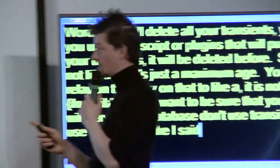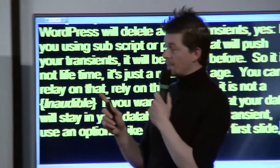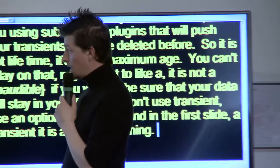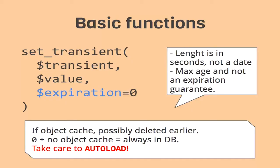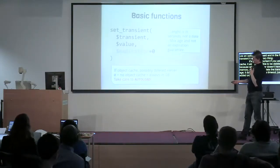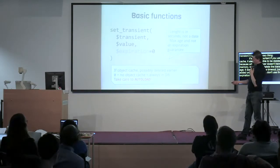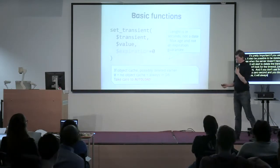Like I said in the first slide, a transient is a temporary thing. If you're using object cache, it's also possible to be deleted earlier, because when the server doesn't have enough memory it will start to delete transients by age - it doesn't look at the timeout, just the insertion order. And if you don't use an expiration - so 0 seconds - and you don't use object cache, it will always be in your database. This is why you have to delete them.